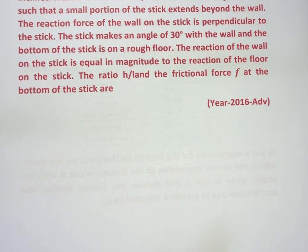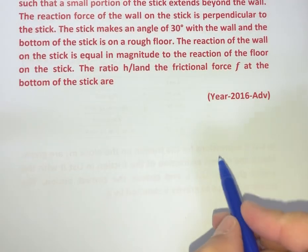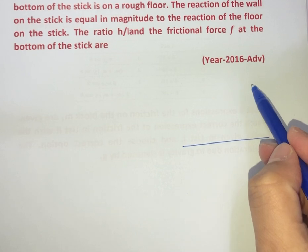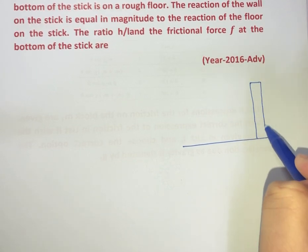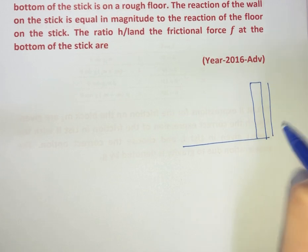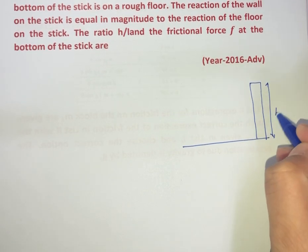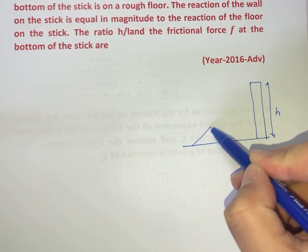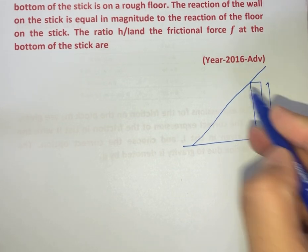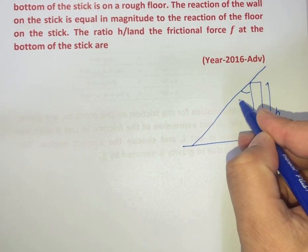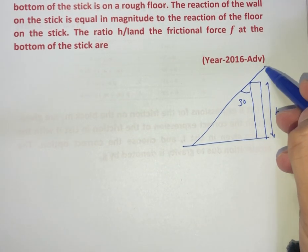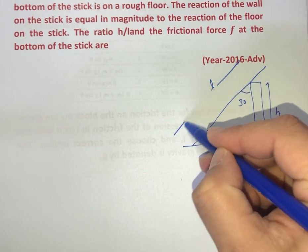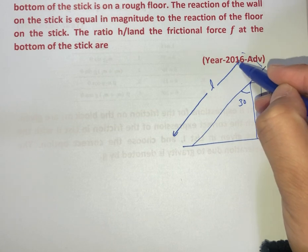So in this case, let's draw the diagram. We have a horizontal floor and there is a wall, and let us suppose the height of the wall is given as h. A stick which is inclined at the angle of 30 degrees with the wall like this. And this angle is given as 30 degrees. And the total length of the stick is given as L.